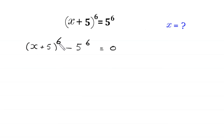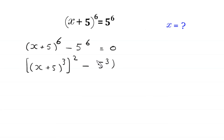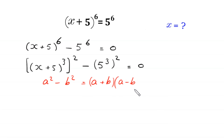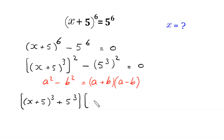Now, x plus 5 whole to the power 6 can be written as (x plus 5 whole cubed) squared, and 5 to the power 6 can be written as (5 cubed) squared. So we have a difference of two squares. Using the identity a squared minus b squared equals (a plus b)(a minus b), this expression factors into two cases equal to 0.